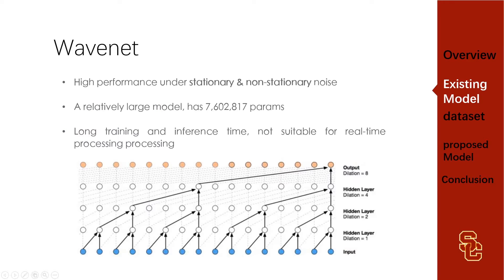So we tried a third model: WaveNet. The WaveNet model can predict the result of the t-th point according to the first t-1 points of a sequence, so it can be used to predict the value of sampling points in speech. WaveNet uses dilated convolution and the output layer uses softmax. The noise reduction performance of WaveNet is even better than RN Noise. However, the model size is too large and it is not suitable for a real-time system.